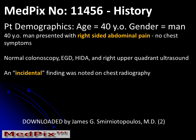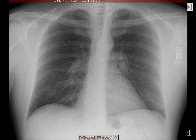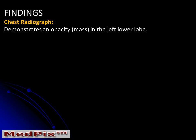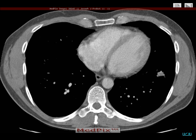The patient is a 40-year-old man who had right-sided abdominal pain, no chest findings. He had a normal colonoscopy, EGD, HIDA, and right upper quadrant ultrasound. An incidental finding was noted on his chest radiograph. The finding is difficult to see on the routine windows, but a cone-down view with higher contrast demonstrates a stranded opacity appearing to connect to the left hilum and the left lower lobe. A chest CT was ordered to explain this opacity.